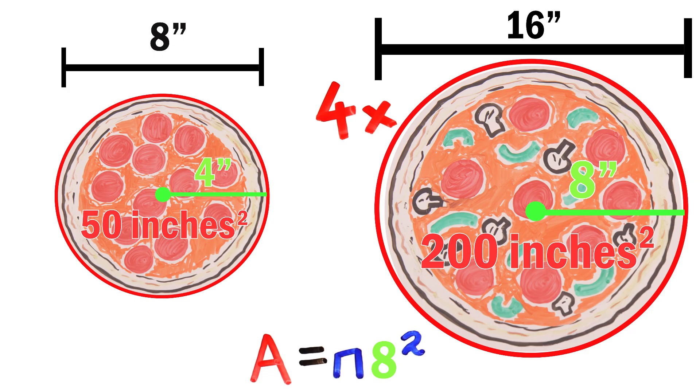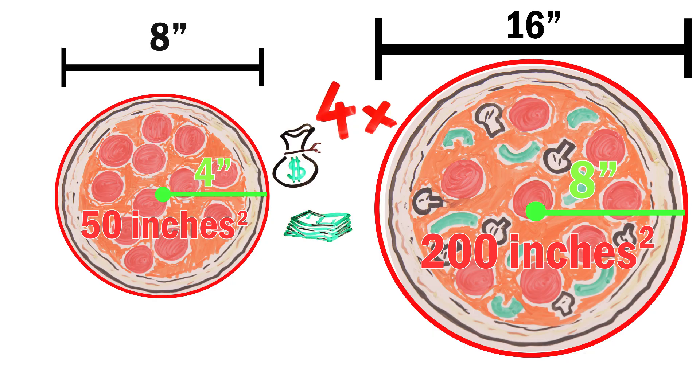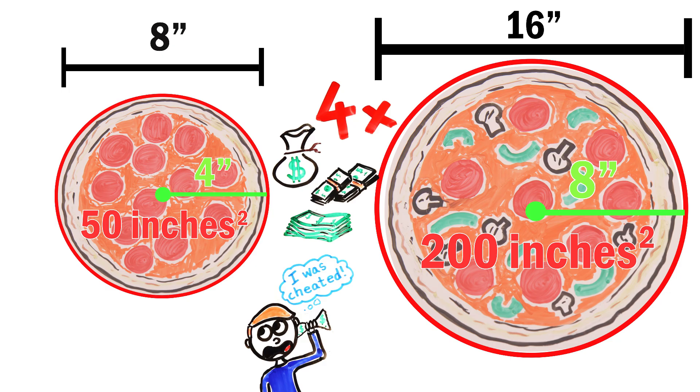This is because the area of a circle increases with the square of the radius. And yet, most of the time, the difference in price between an 8 inch pizza and a 16 inch pizza is not even 2 times more expensive, let alone 4 times more expensive.